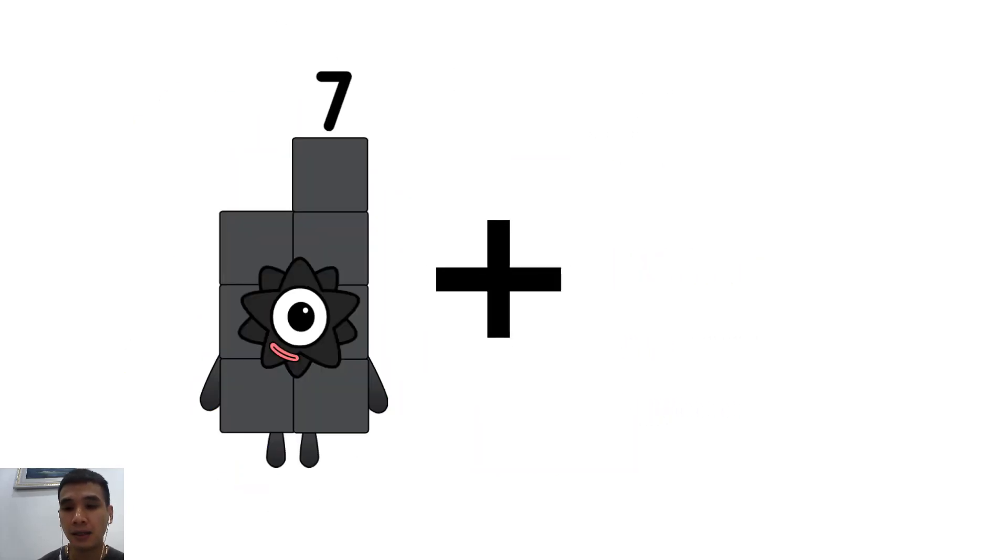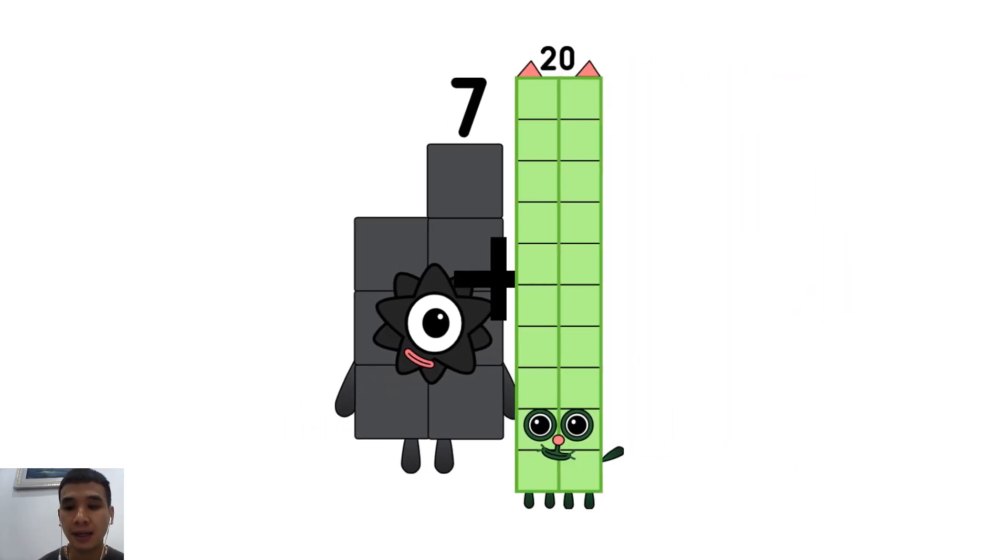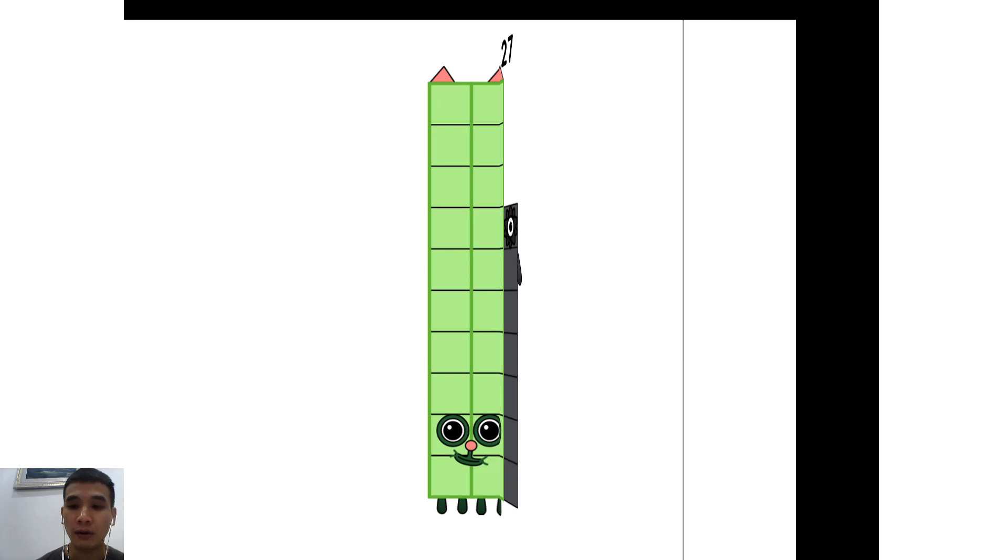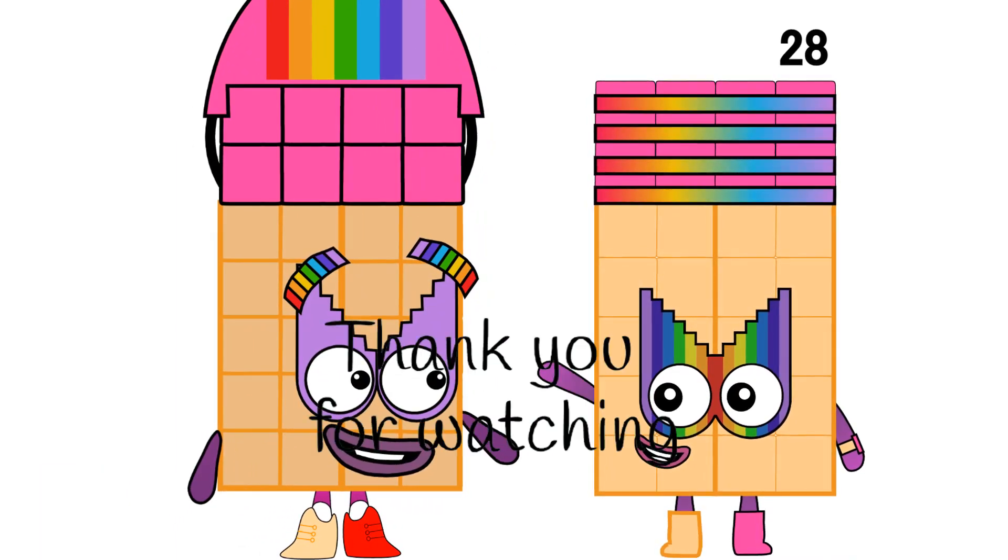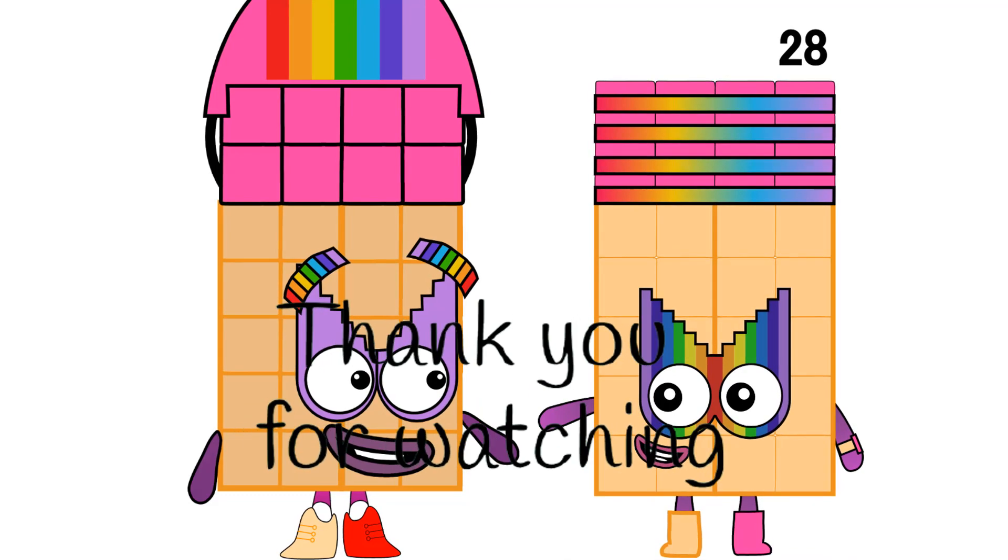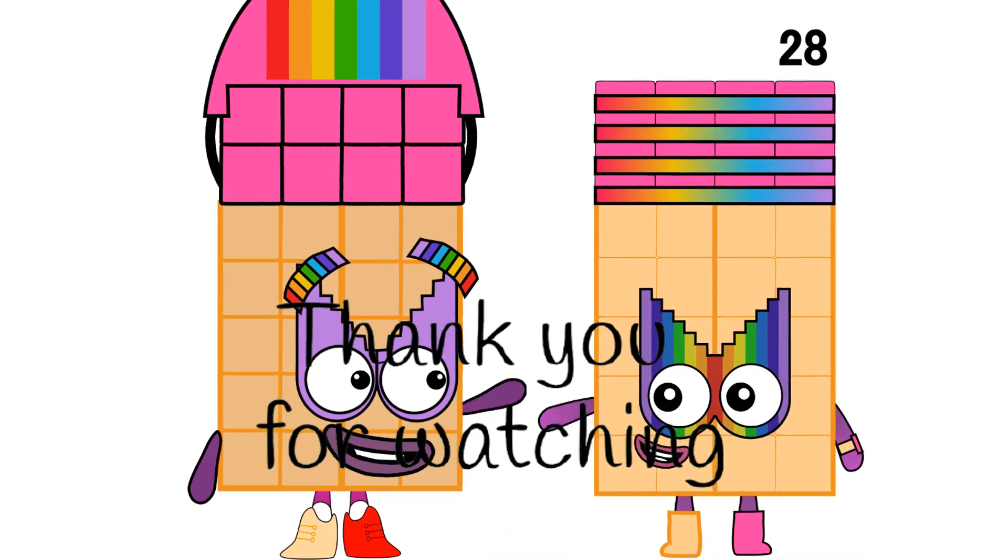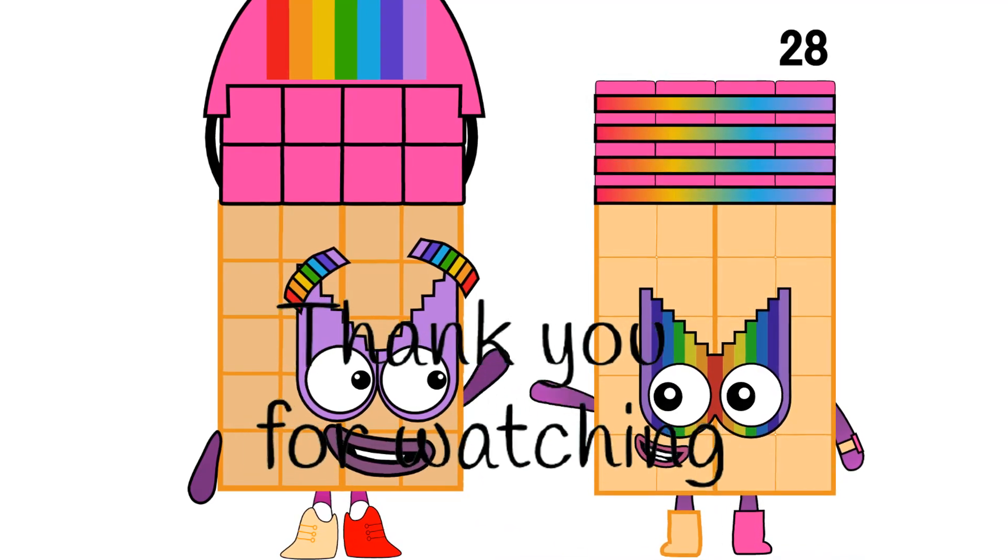7 plus 20 equals 27. 7 plus 5... 6 plus 1 minus 1 equals 23. 7 plus 2. I'll see you next time.